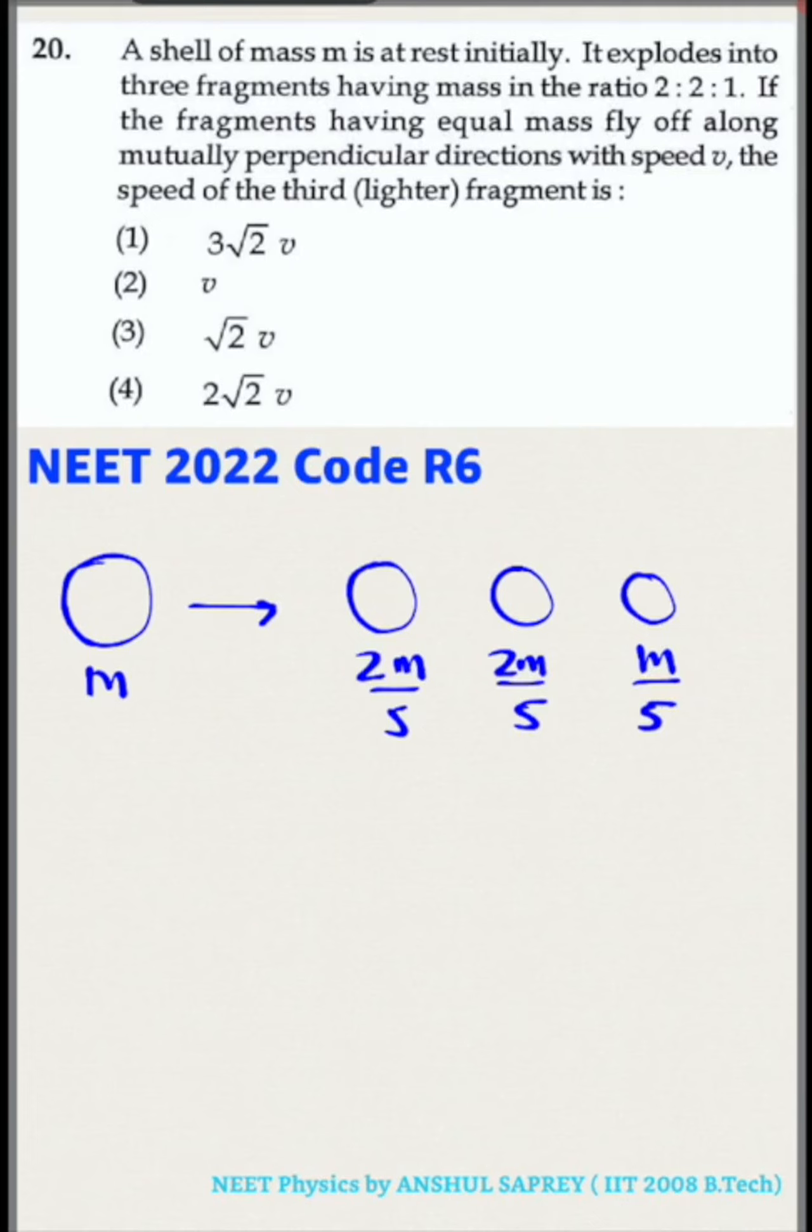The next line says if the fragments having equal mass fly off along mutually perpendicular directions with speed v. Let us consider one of the fragments is going rightward with speed v, another fragment of same mass is going upward with speed v. The third fragment's velocity is unknown, so let's consider it to be v vector.